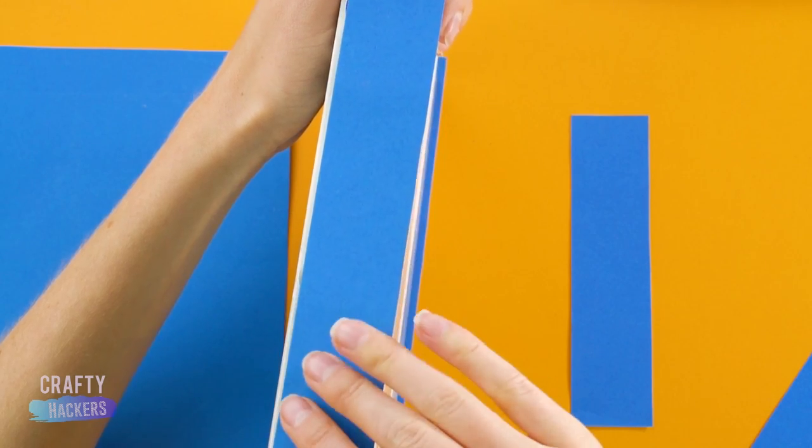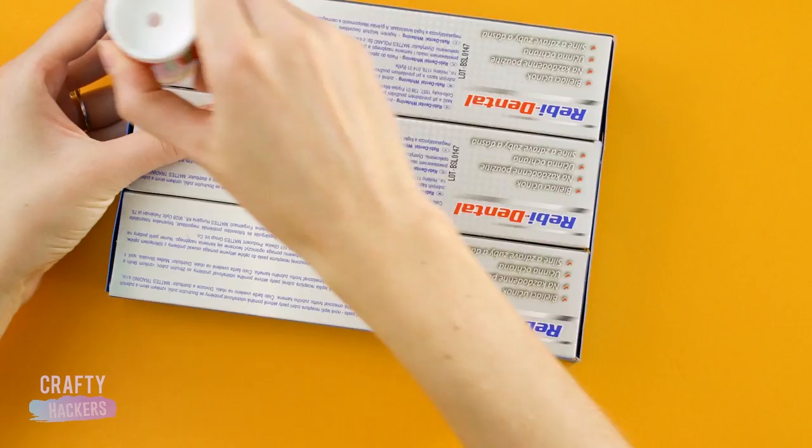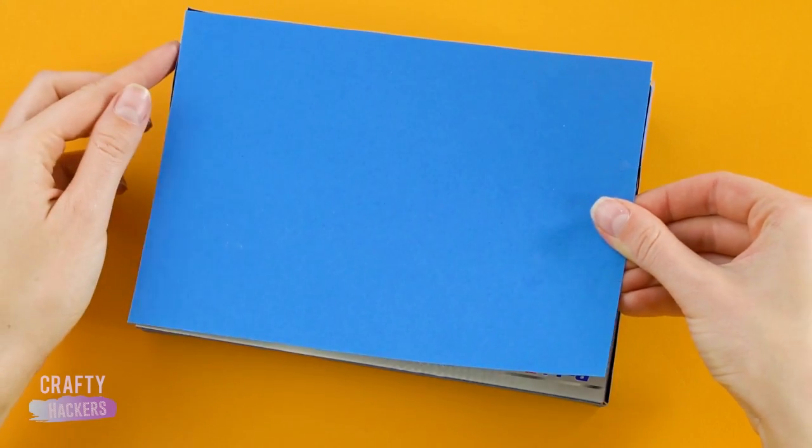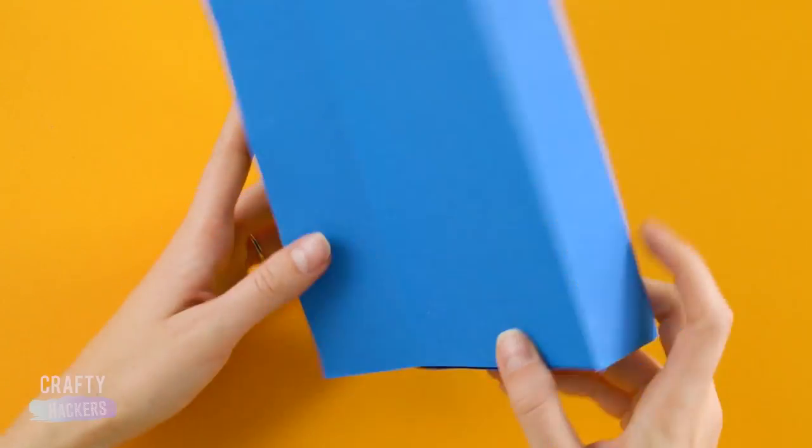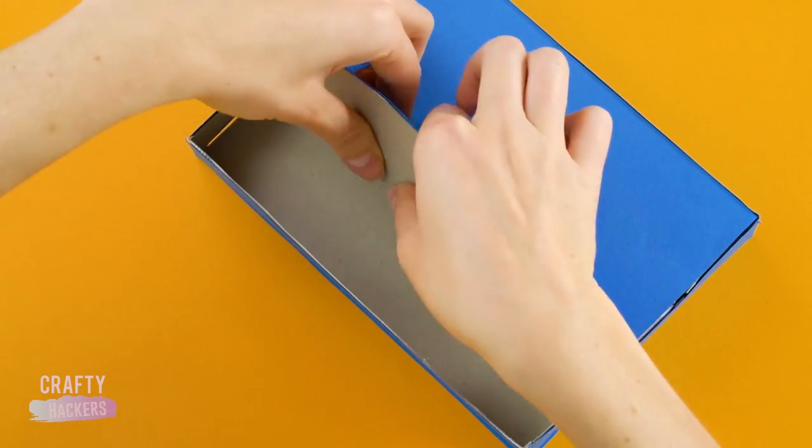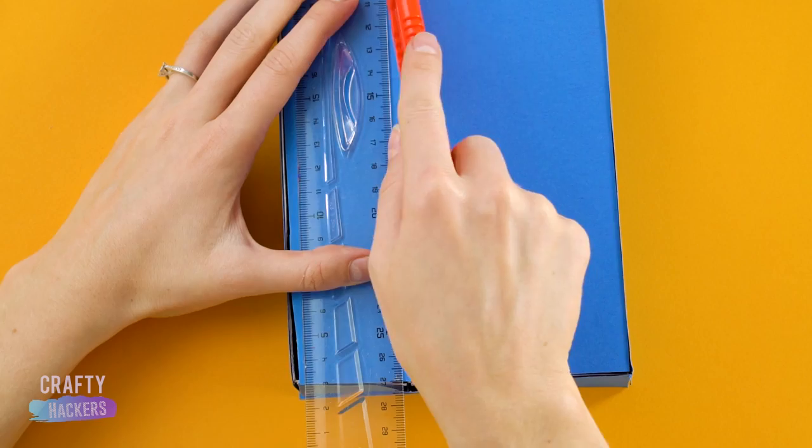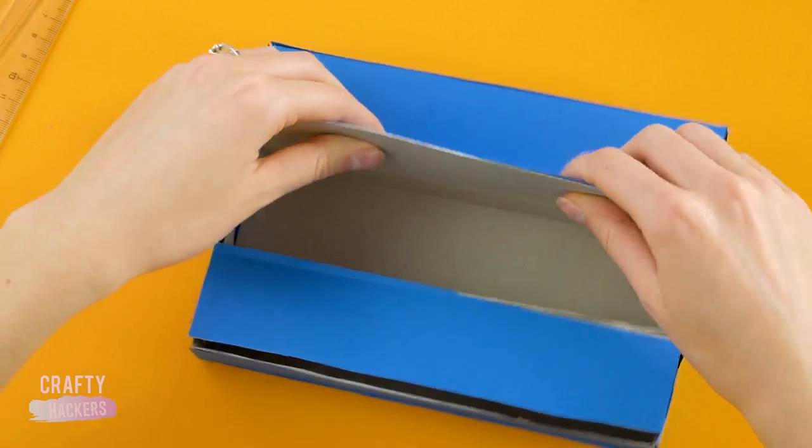Now for a little color. Glue some blue construction paper to the lockers with a glue stick. Cut the paper so the locker doors can open. Use a ruler to cut a straight line. Mom or Dad can help you with the sharp stuff.